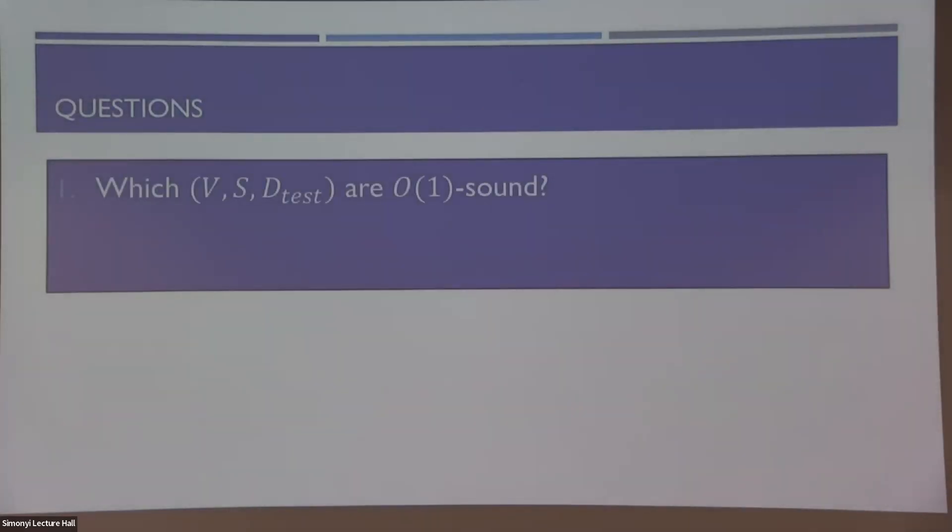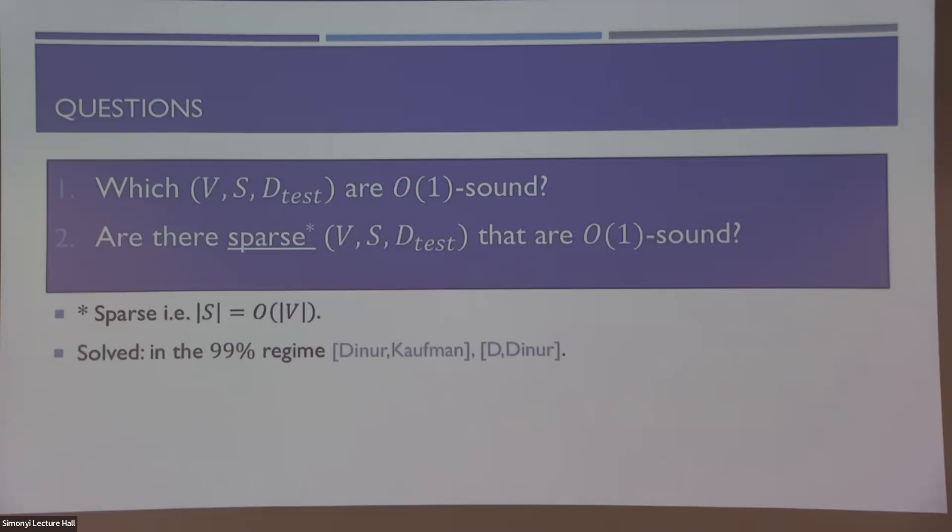I saved a bit over time. So let me just say a few open questions in the area. One more philosophical open question is how to actually design these agreement tests. We know some examples, but we can't directly say for a set system when does it or doesn't it have an agreement test. As a more concrete question, one can ask whether there are sparse set systems with agreement tests, where when I say sparse, I mean families of these set systems where the number of sets is linearly proportional to the number of variables. In the 99% regime, this was in fact solved in 2017 by Dinur and Kaufman. In the 1% regime that I didn't define, this is still open. I think that the state of the art today is by Impagliazzo, Kabanets, and Wigderson that had a small polynomial dependence here.